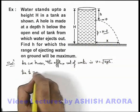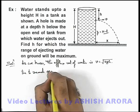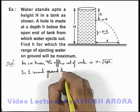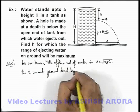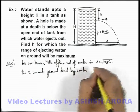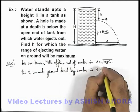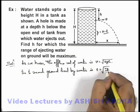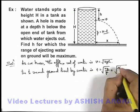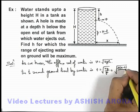Time to reach ground level by water is, this time can be written as root 2y by g, which can be written as root of twice H minus small h by g.